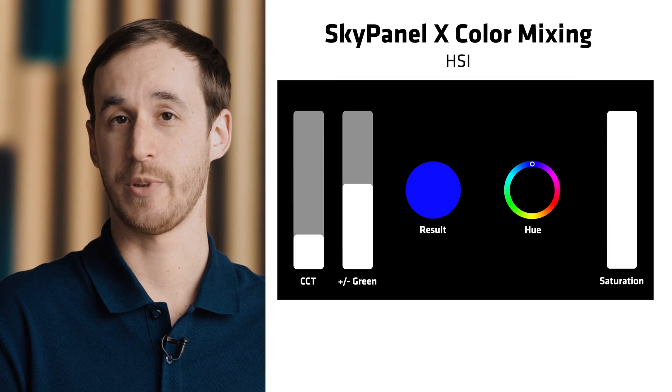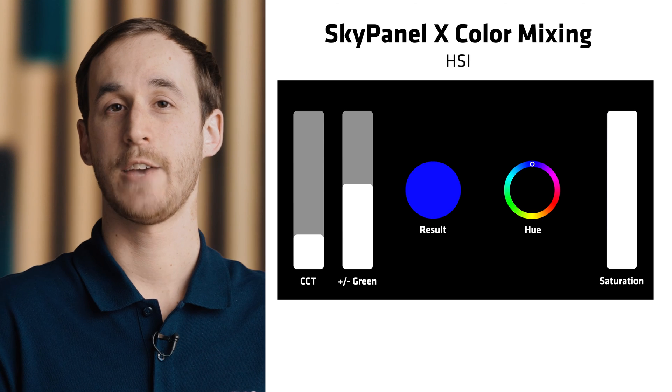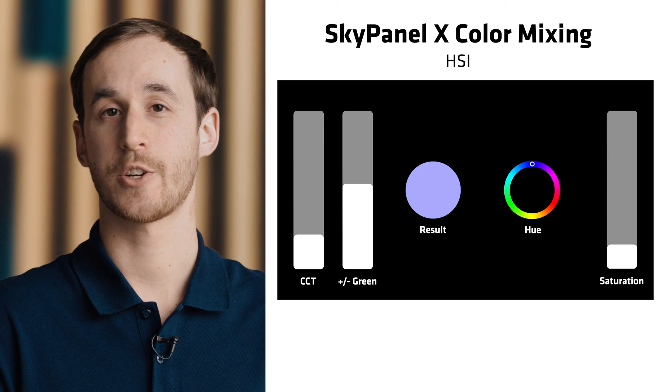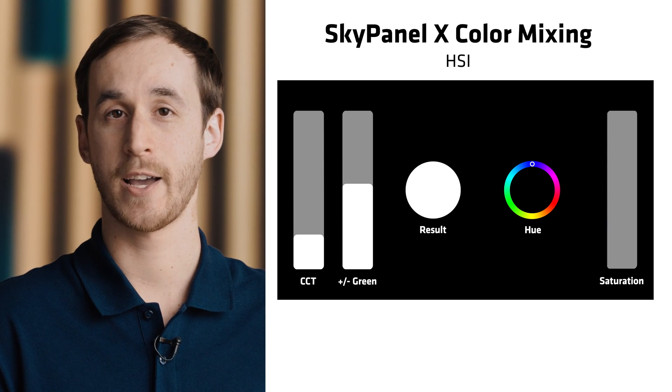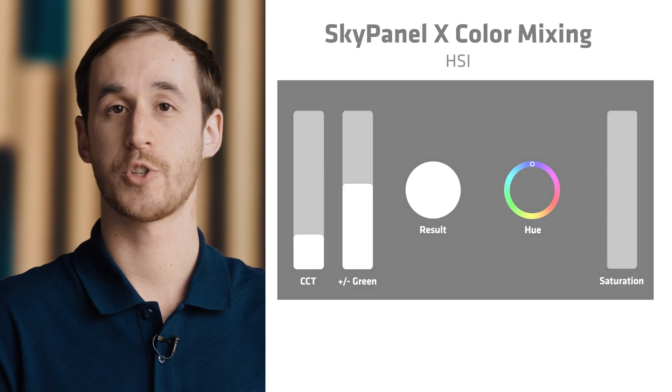Another possible color mode is HSI — your hue, saturation, intensity. On a console, this behaves a lot like the new RGB modes. If you bring your saturation all the way down to zero, you're creating white light, so there's no crossfade between CCT and HSI.